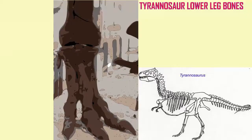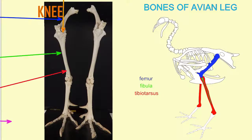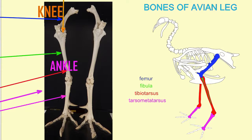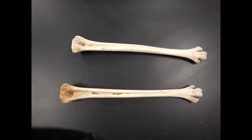In dinosaurs such as this tyrannosaur, beneath the ankle joint were small tarsal bones and the metatarsals of digits 2, 3, and 4. In birds, these fuse to form the tarsometatarsus, a single bone composed of the fusion of small tarsal bones and three metatarsals. Here in the emu, one can observe that this is a single bone, and one can no longer observe the sutures where the ancestral bones have fused.